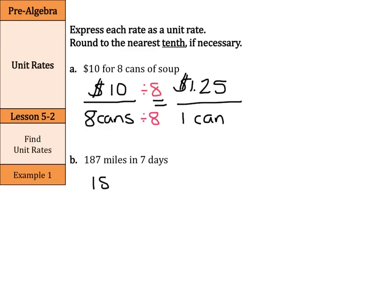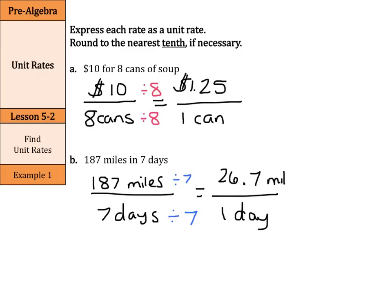Then we have 187 miles in 7 days. Again, to make this a unit rate, we need to get the denominator to be 1. The way we can do that is divide by 7 on the bottom and divide by 7 on top. 187 divided by 7 is 26.7 miles in one day.